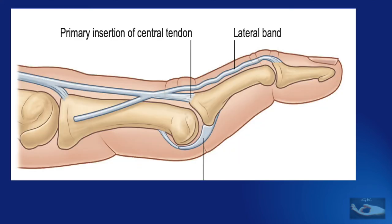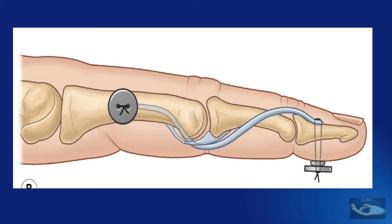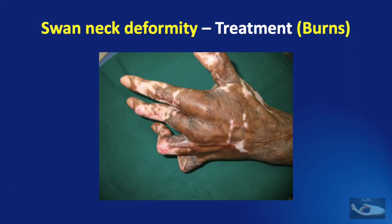...a palmaris longus tendon graft is used to restrain the PIP joint extension and to extend the DIP joint at the same time. The tendon graft is fixed to the distal phalanx by a pullout suture, then passed between the flexor tendon and the palmar plate of the proximal interphalangeal joint, and put into an osseous tunnel in the proximal phalanx.